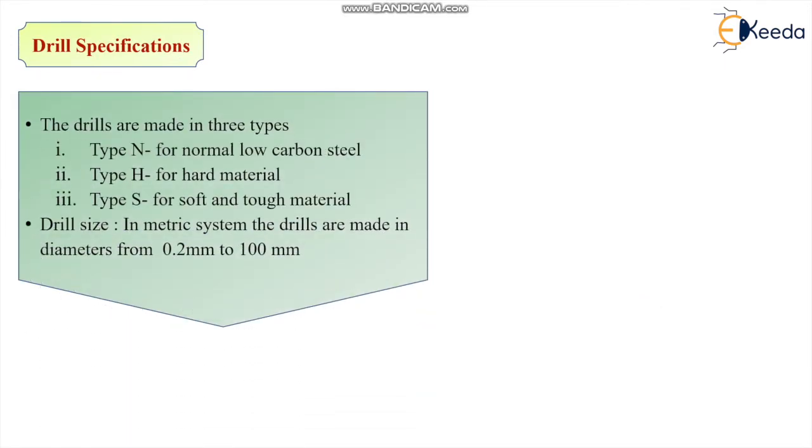Now, what are the drill specifications? The drills are made in three types: type N, type H, and type S. Type N for normal low carbon steels, type H for hard materials, and type S for soft and tough materials. The drill sizes, in metric system, the drills are made in diameter from 0.2 millimeter to 100 millimeter. In the beginning I showed you a few examples of drill, where the drill diameter was embossed on the tool.